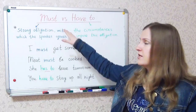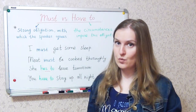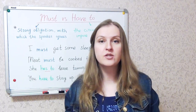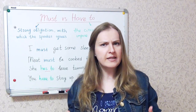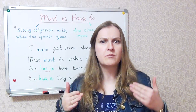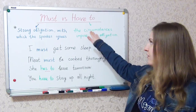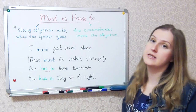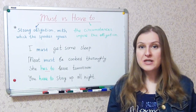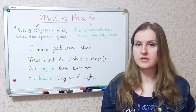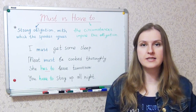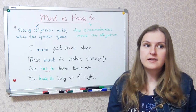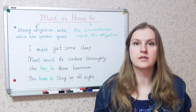Must presupposes a strong obligation with which the speaker agrees. So you agree with it, you understand it, you realize the importance. While have to means that the circumstances impose this obligation — so the speaker does not agree with it, does not understand it. You have no other choice; something makes you do it.